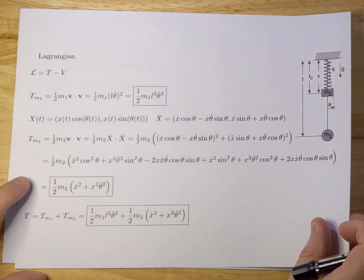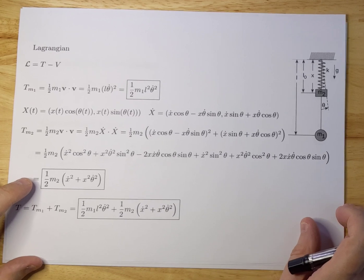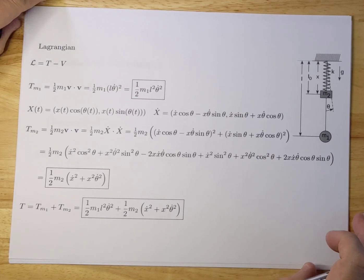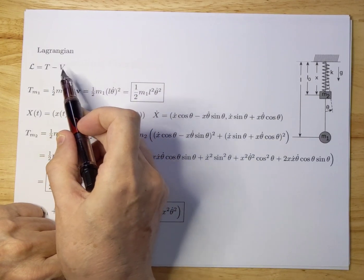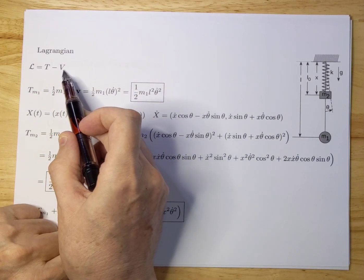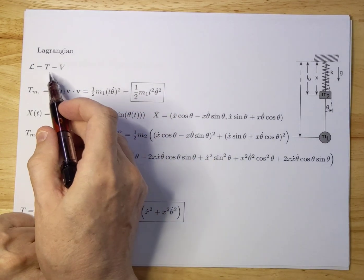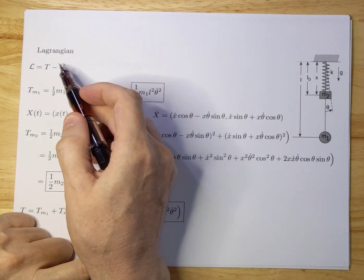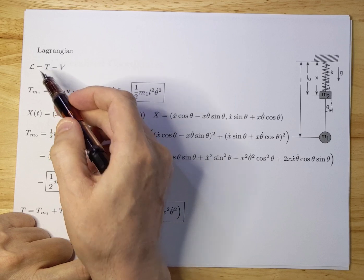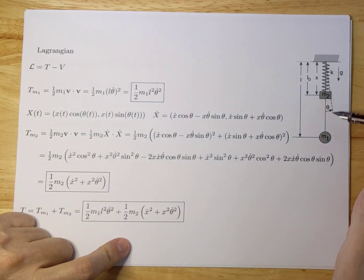The next step once we determine our generalized coordinates is to set up the Lagrangian. The Lagrangian is a combination of kinetic energy and potential energy, T minus V. In the system there are two kinetic energy terms, one associated with M1 and the other associated with M2.